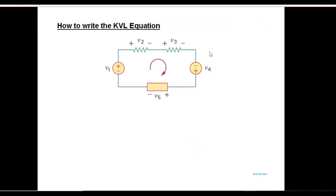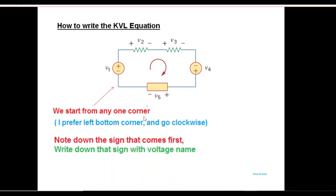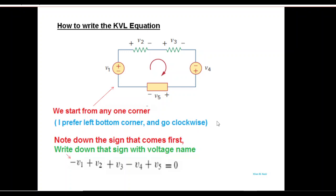Now, how to write a KVL equation: you can start from any corner — I prefer to start from the left corner. We go around and write the equation by noting down the sign that comes first. You can see there's a negative sign first, so we write negative V1. Then there is a positive sign, so we write positive V2, then positive V3, negative V4, and positive V5. All of this should be equal to zero according to KVL. This is how you write the equations.